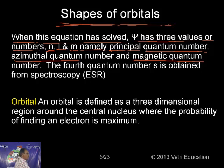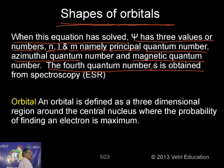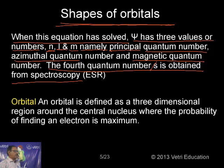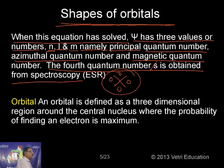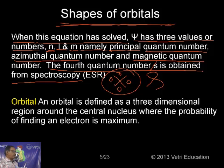The fourth quantum number is obtained from spectroscopy, not from the Schrödinger derivation. This is a very important point to keep in mind. The spin quantum number is not obtained from the Schrödinger equation — it is obtained from spectroscopy, principally ESR.